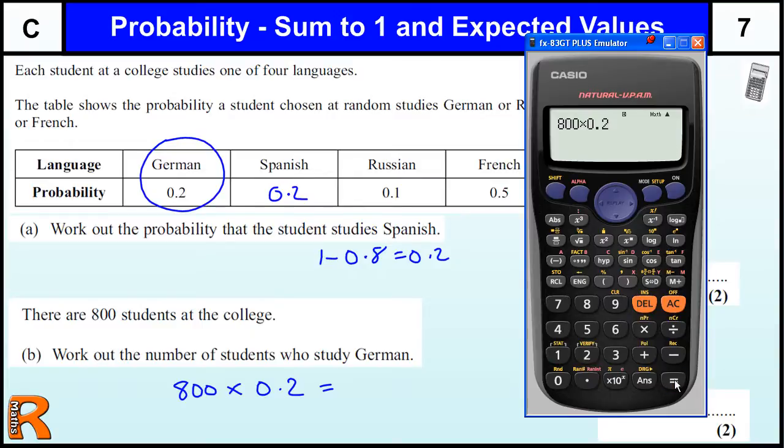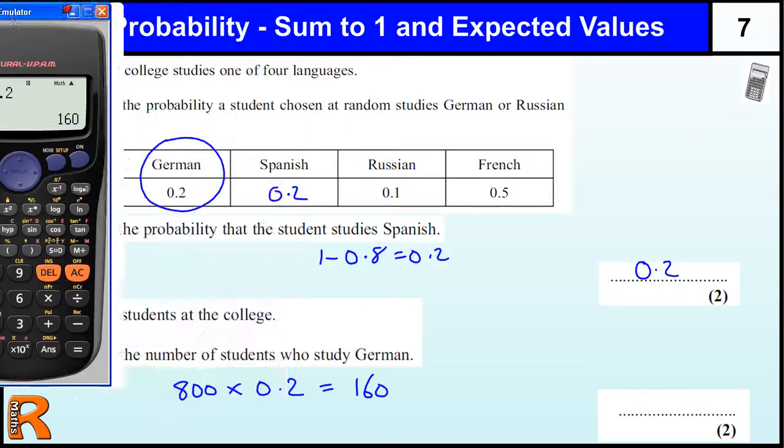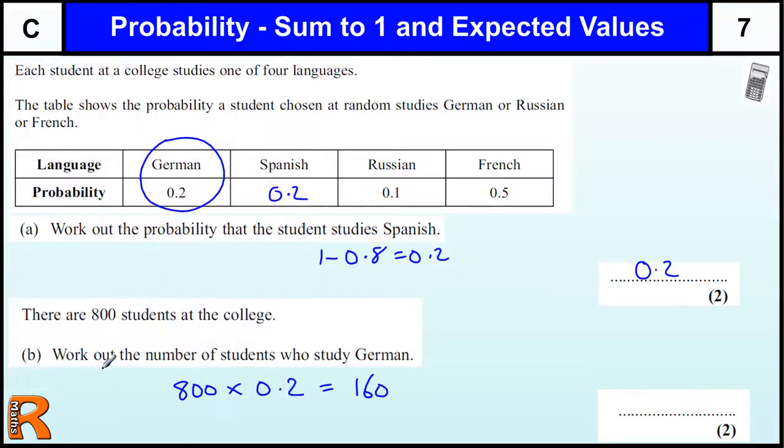If I roll a dice 100 times, or 60 times, or 600 times, how many times would I expect to get a 6 or a 1? So that's expected values. But this, because this is just all the students that study, we know if the probability is 0.2.